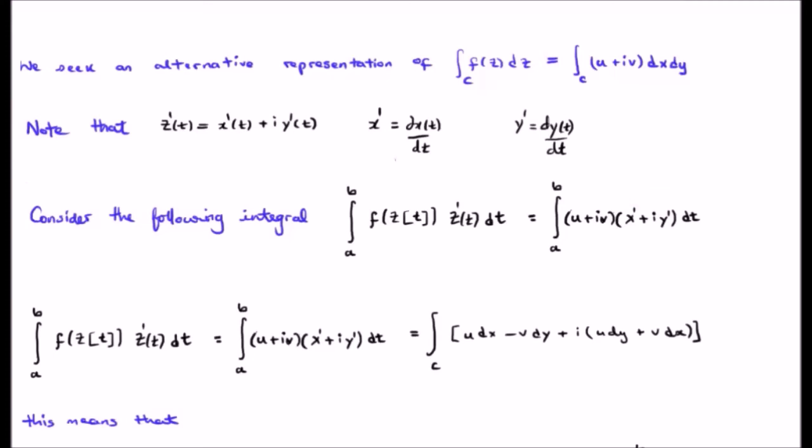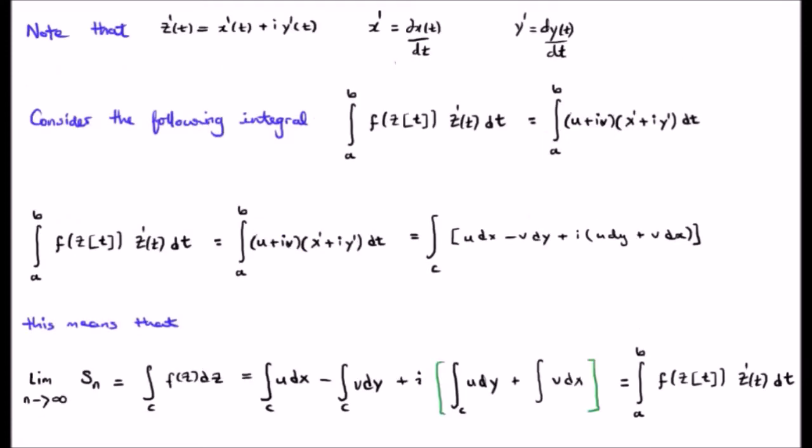If you multiply this out, we get the expression written on the bottom right of your screen. It's separated out the real components udx minus vdy and the imaginary components udy plus vdx. But the point is this is exactly what we started with.